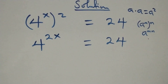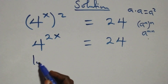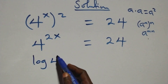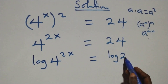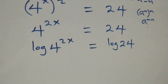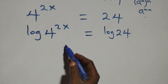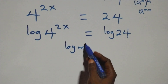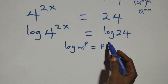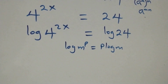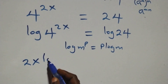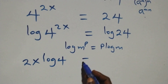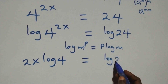The next step: we take the log on both sides. We have log of 4 raised to power 2x equals log 24. Then we apply the power rule of logarithms: log of m raised to power p is the same as p times log m. So the power 2x comes down and we have 2x times log 4 equals log 24.